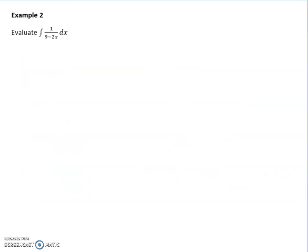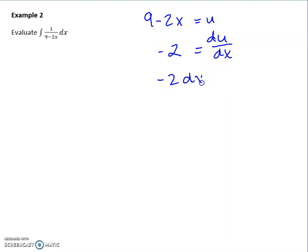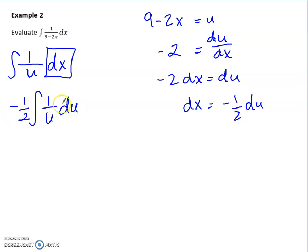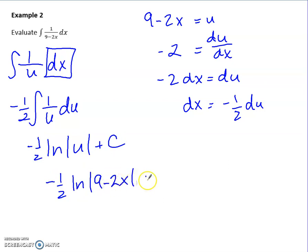In Example 2, again let the bottom be u. Taking the derivative of both sides gives du = −2 dx, so dx = du/(−2). Some people find it helpful to rewrite the integral with u before substituting. The only thing to replace is dx. Bringing out −1/2, the integral reduces to ∫(1/u) du, which is the natural log of u. Substituting back gives −(1/2) ln|9 − 2x| + C.